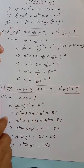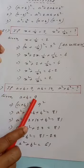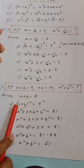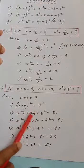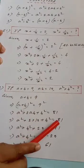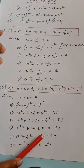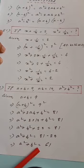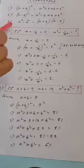Another example: if a + b = 9 and ab = 10, find a² + b². Squaring both sides: (a+b)² = 81. Applying the formula: a² + 2ab + b² = 81. Substituting ab = 10: a² + b² + 20 = 81. Therefore a² + b² = 61. These are important applications of the algebraic identities (a+b)², (a−b)², and a²−b².